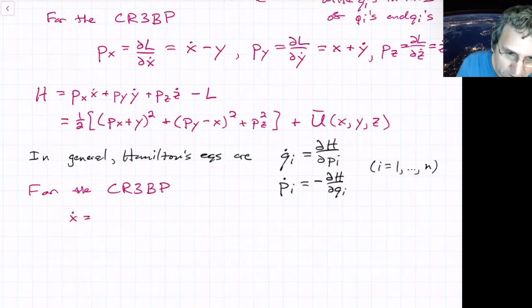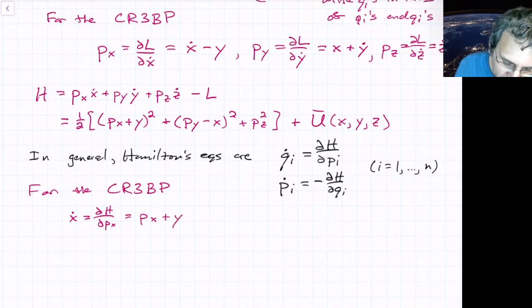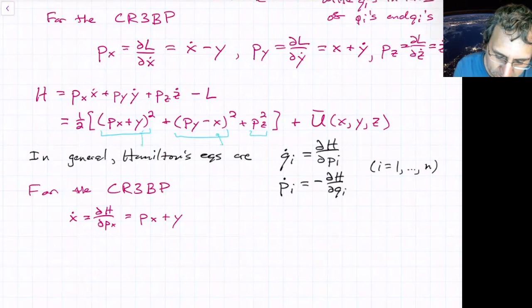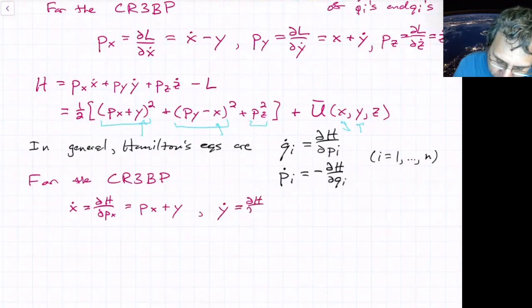Again, if we do this now for the CR3VP, we'll get x dot equals partial h partial px, and that's equal to px plus y. The only dependence on px, right, is this first term here. The only dependence on py is there, and the only dependence on pz is there. The dependence on x, y, and z, or particularly x and y, is going to be a little bit complicated because they show up in a couple different places.